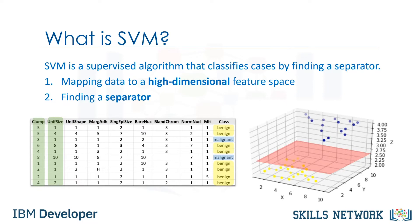Therefore, the SVM algorithm outputs an optimal hyperplane that categorizes new examples. Now, there are two challenging questions to consider. First, how do we transfer data in such a way that a separator could be drawn as a hyperplane? And two, how can we find the best or optimized hyperplane separator after transformation?